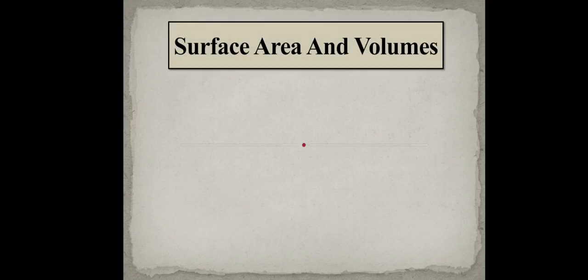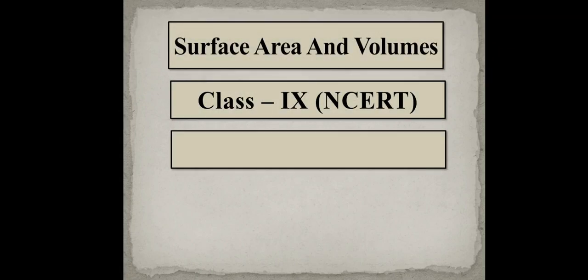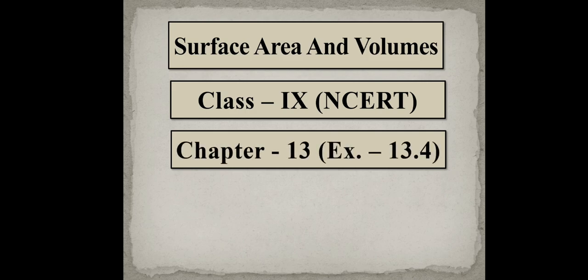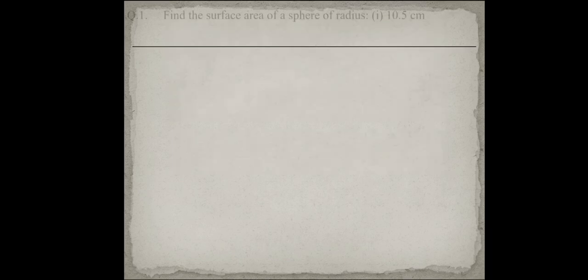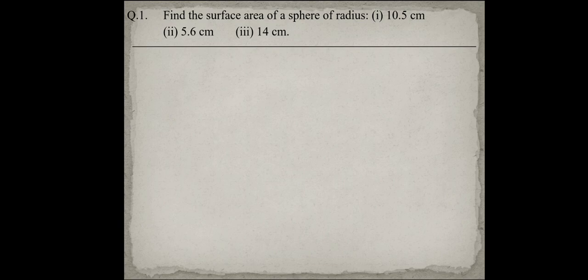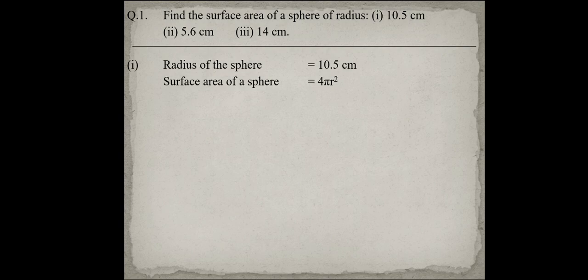Hi and hello everyone, welcome back to YouTube channel Mass Classes by Sandeep. Today in this video we will do Chapter Surface Area and Volumes, Exercise 13.4. In this exercise we will find out the surface area of a sphere — sphere means like a ball, like Earth, like Moon. In the first question, find the surface area of a sphere of radius 10.5 cm, second part 5.6 cm, and third part 14 cm. We will apply the formula of surface area of a sphere, which is equal to 4πr².